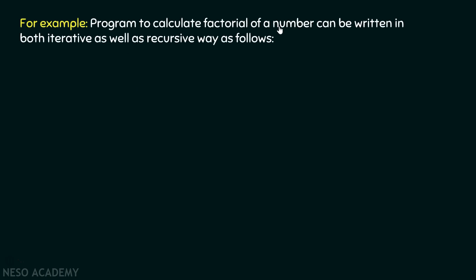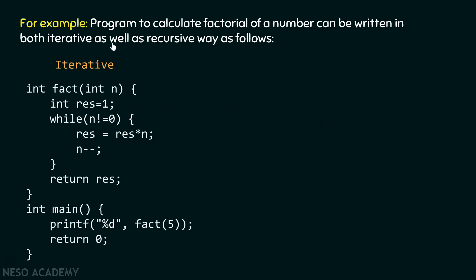We need to write a program to calculate the factorial of a number, and here I will show both the iterative as well as the recursive version. Here is the iterative version. Inside this function, I have declared one variable 'res' which represents the result, initialized to one. After that we have a while loop that runs until n is not equal to zero. Inside this loop, res equals res times n, and then we decrement n. This calculates the factorial of n, and then we return the result to the main function and print the factorial of five.